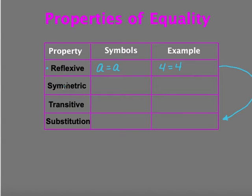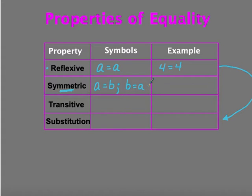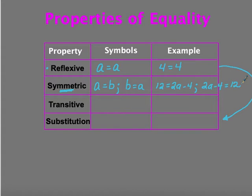The symmetric property is kind of like the mirror property. Symmetric property says if A is equal to B, then B must be equal to A. That helps us rearrange because sometimes we like variables on the left-hand side. For example, if 12 equals 2A minus 4, then 2A minus 4 equals 12. It allows us to flip-flop the left and right side of the equation while keeping both sides equal.